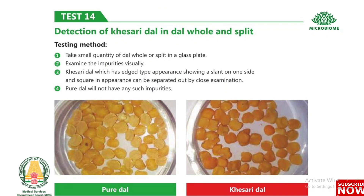Test 14: Detection of kesari dal in dal — whole and split. Take a small quantity of dal, whole or split, in a glass plate and examine visually. Kesari dal has an edged-type appearance with a slant on one side and a square appearance, and can be separated out by close examination. Pure dal will not have any such impurities.